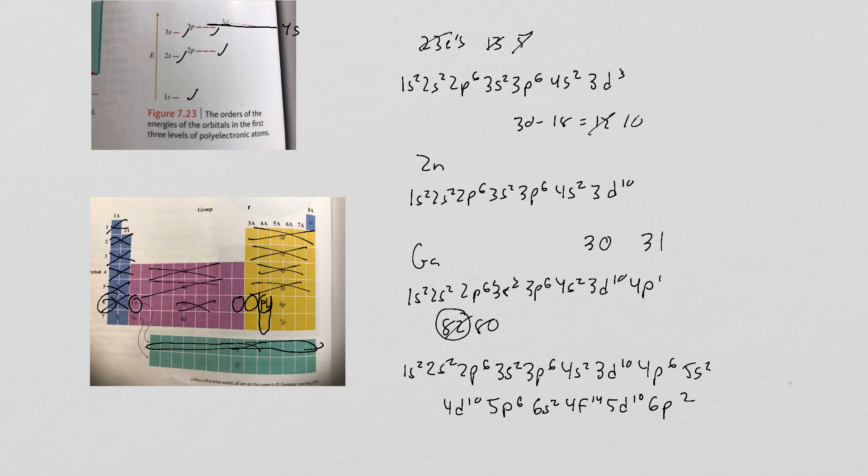You can check this on your own periodic table. 2-8-18. The third energy level is filled. The fourth energy level is also filled. So that's 32. The fifth energy level has a total of 18 electrons. And the sixth one has a total of 4. And this will match up with the periodic table.